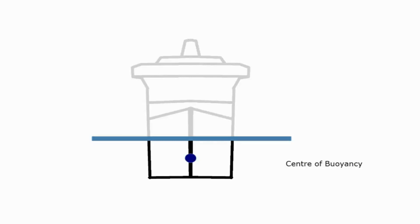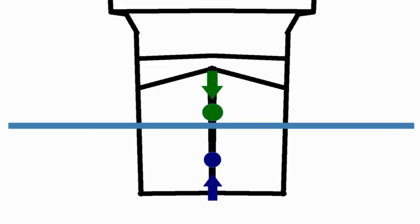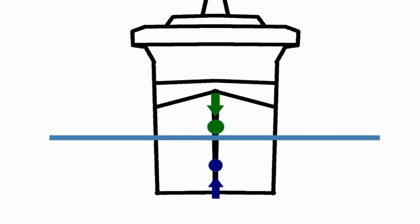I've now got on this diagram the center of gravity in green and the center of buoyancy in blue. The green arrow is showing that it's the weight of the ship pushing down, and the blue arrow is showing it's the buoyancy pushing up.